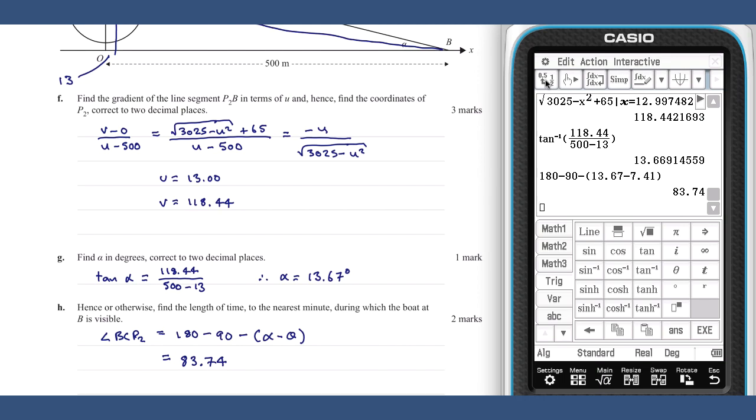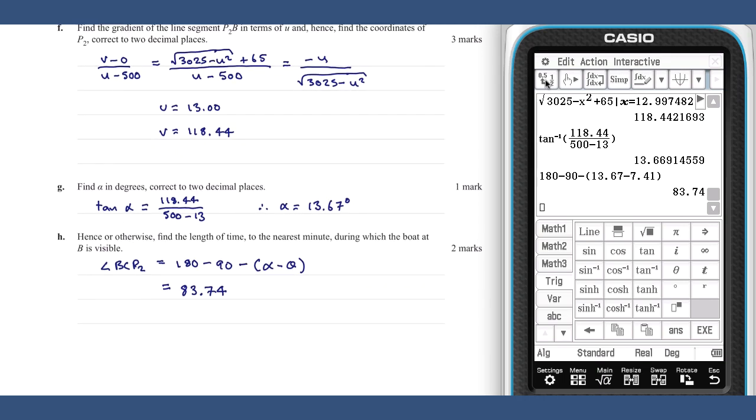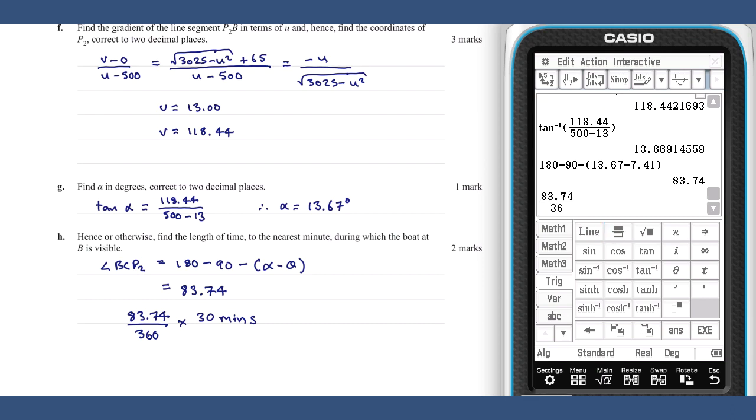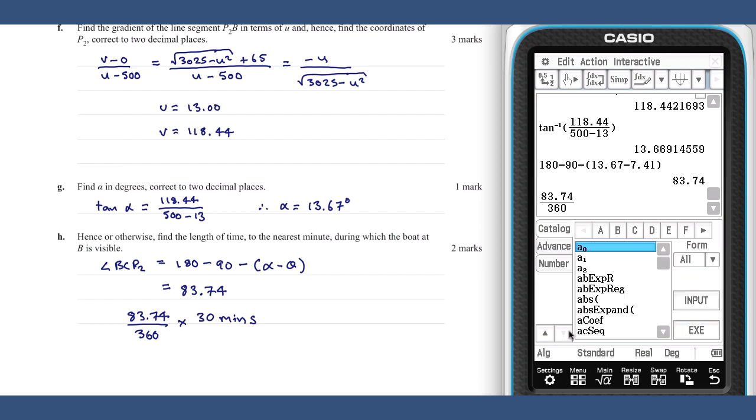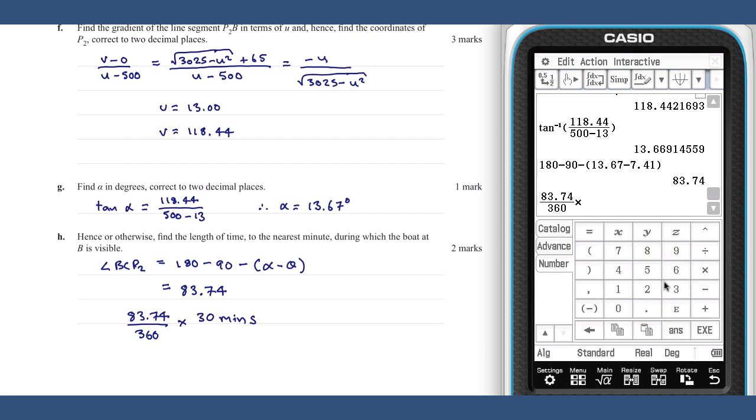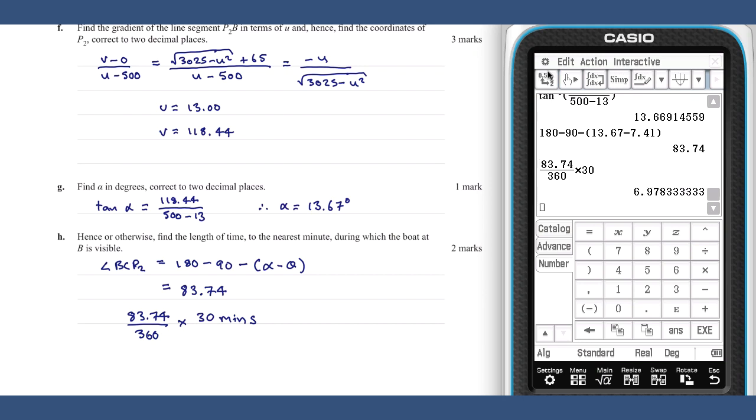The time corresponding to this part of the journey can be computed as 83.74 degrees out of a 360 degree revolution multiplied by a period of 30 minutes, giving us a time in minutes to the nearest minute of 7.